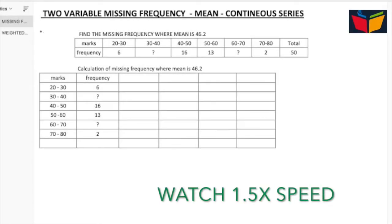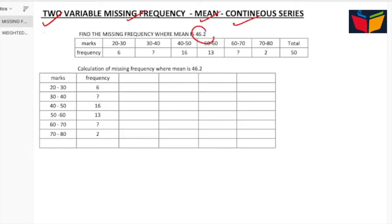In this video I will help you understand how to calculate two missing frequencies in mean in continuous series. In this question, the mean is given as 46.2, and marks and frequency are given. I have written it here for the solution.